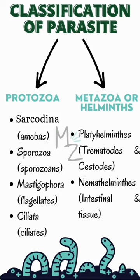Protozoa is further classified into Sarcodina, which includes Amoebas — for example, Entamoeba histolytica — and Sporozoa, which includes Sporozoans, for example, Plasmodium.